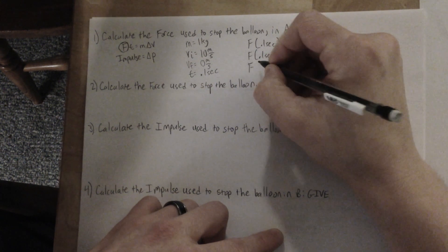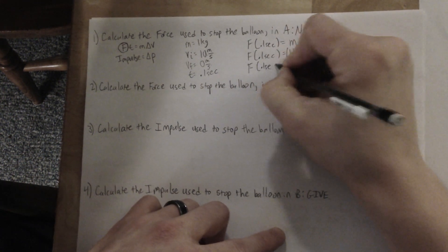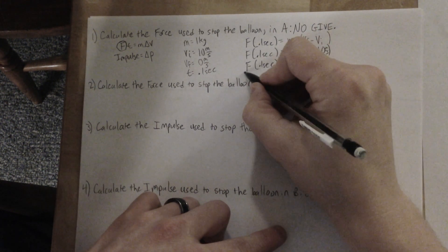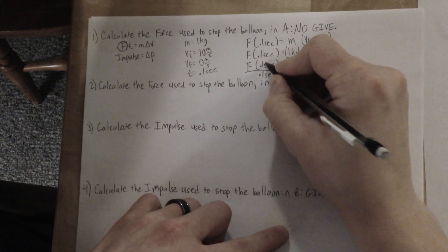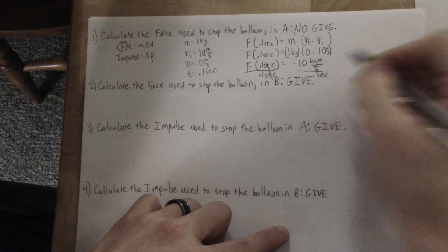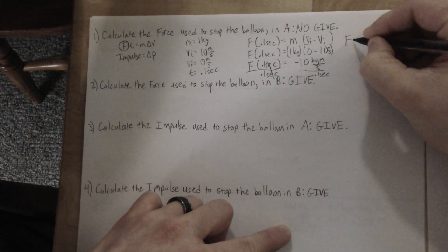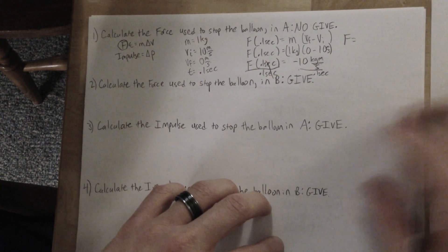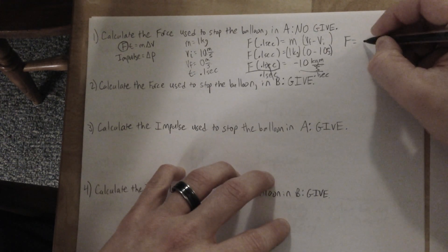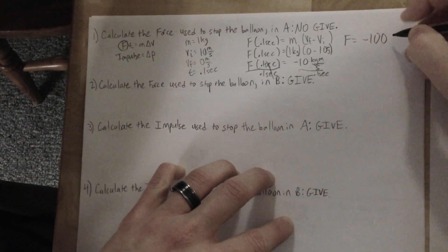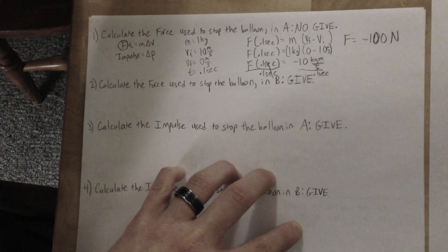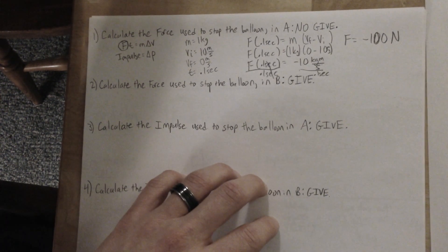Now we calculate the force used to stop it. If we divide both sides by the contact time of 0.1 seconds, we get the force. Negative 10 divided by 0.1 is negative 100. The force is negative because it's used to slow the balloon down — negative 100 newtons. That's a large force used with a small contact time.